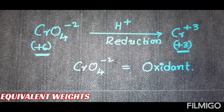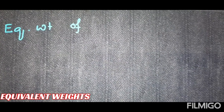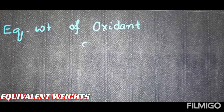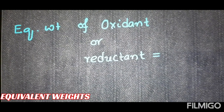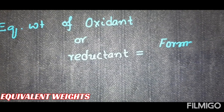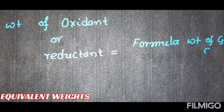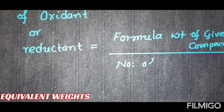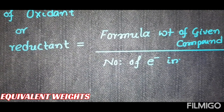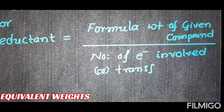Students, let's see how we can calculate equivalent weight for an oxidant or reductant. The equivalent weight of an oxidant or reductant is equal to the formula weight — or molecular weight — of the given compound, divided by the number of electrons involved or transferred in the reaction.